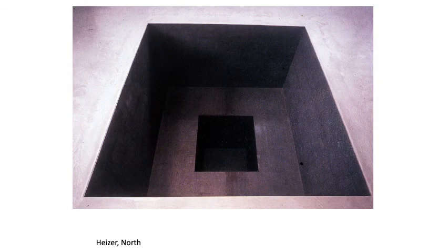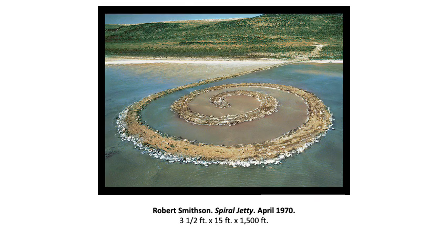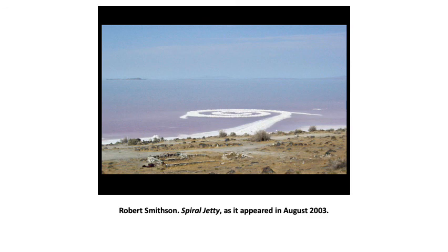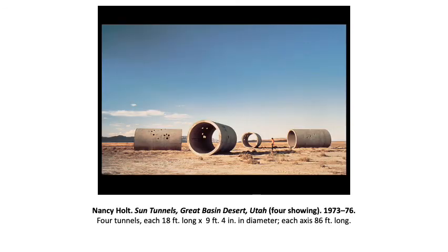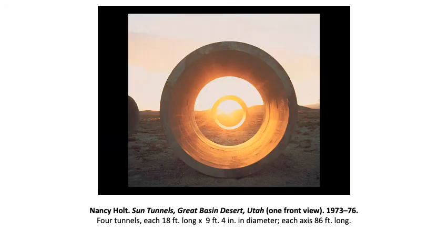Michael Heizer digs giant holes in the earth — we'll see that again with site-specific work. Robert Smithson made Spiral Jetty out of salt, water, Great Salt Lake dirt, and natural materials. It disappeared for a while and a drought came and it reappeared. The Sun Tunnels actually line up with the solstices and have constellations carved in them. And that will get us to Earthworks and site-specific next time. Thank you.